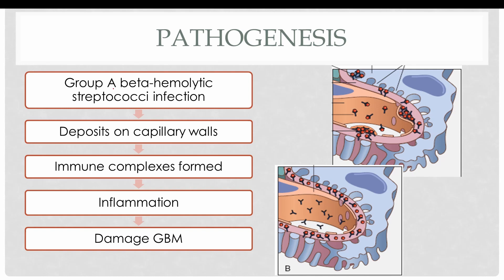In the pathogenesis, a skin or pharyngeal infection with group A beta-hemolytic streptococcus releases exotoxin B, which acts as an antigen. Exotoxin B, once released into the blood, deposits on the capillary walls in the glomeruli. These antigens attract antibodies and form immune complexes or antigen-antibody complexes, as seen in the figure where antigens are attached by antibodies.